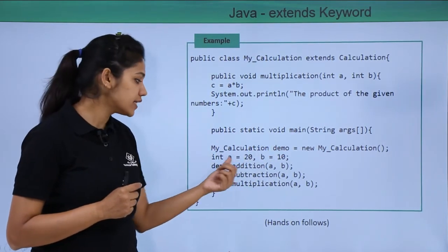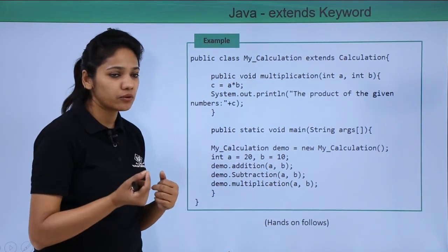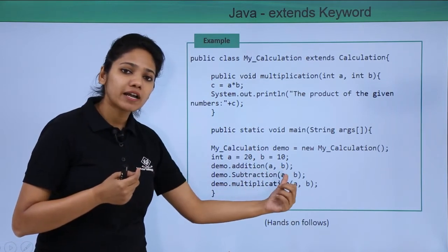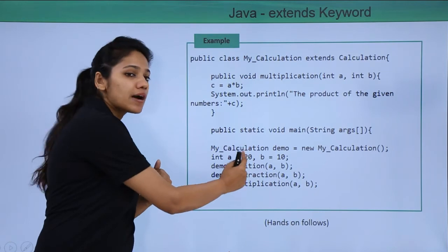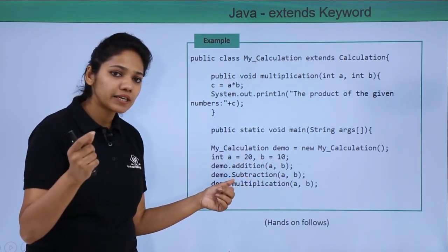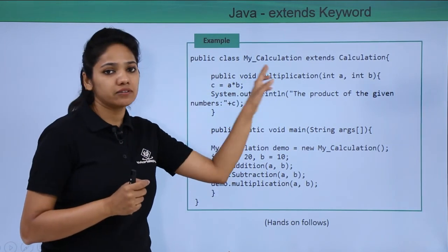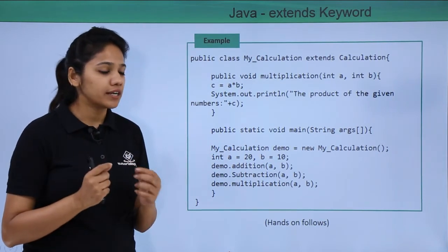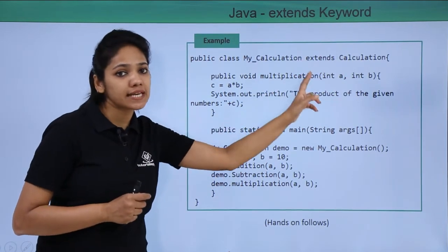You write the object reference — called demo — followed by the method name and then A and B. You can directly pass the value or pass the reference. When you call a method there are two possibilities: either you provide the value directly or you pass the reference. Here we create integer A and B with certain values and then pass the reference in the parameters as A comma B, which equals 20 and 10. You have not rewritten the addition and subtraction methods in myCalculation — the main advantage is code reusability. Redundancy of data is avoided. You call the addition and subtraction methods from your Calculation class, which is only possible when you extend the parent class.